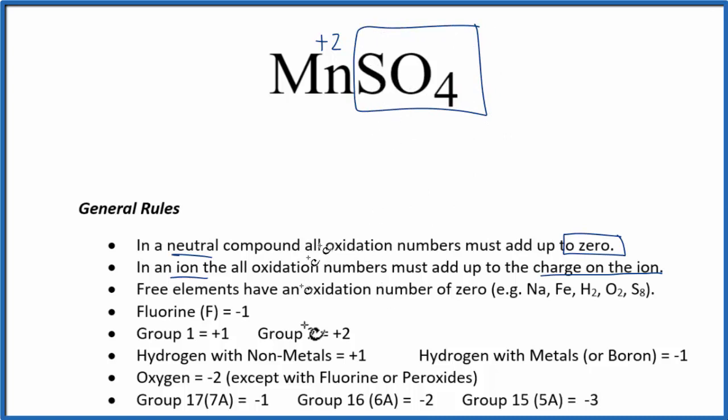So sulfur is not on our list. That can have different oxidation numbers. But oxygen, oxygen is usually minus 2, except with fluorines and peroxides. So each oxygen is going to be minus 2.